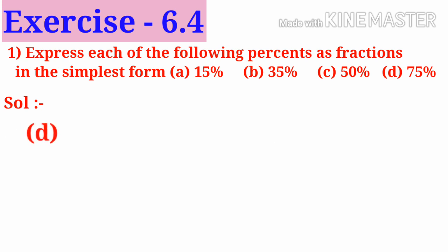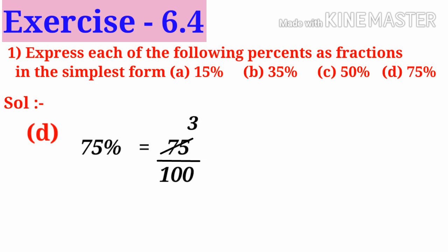D: 75 percent is written as 75 by 100. On simplification by 25, we get 3 by 4, which is the simplest form.